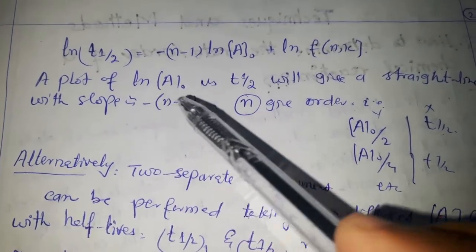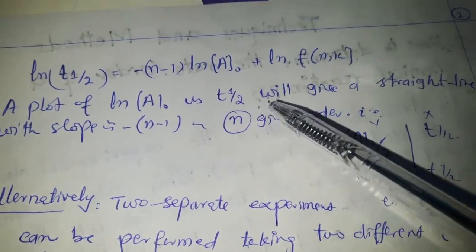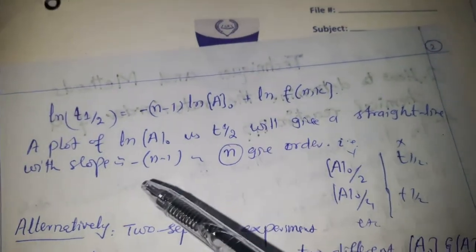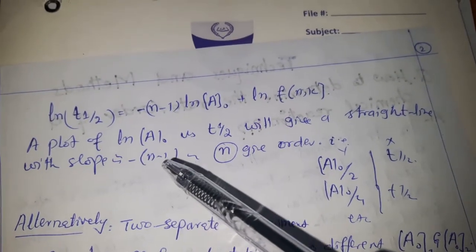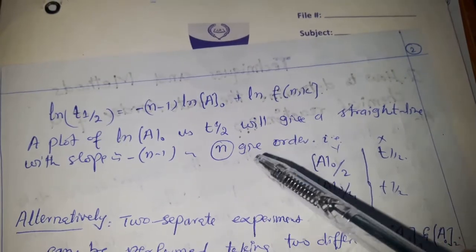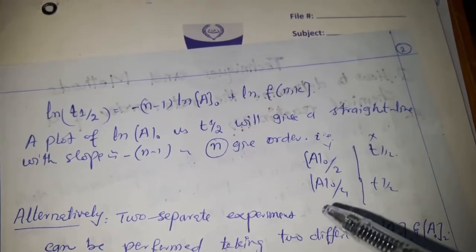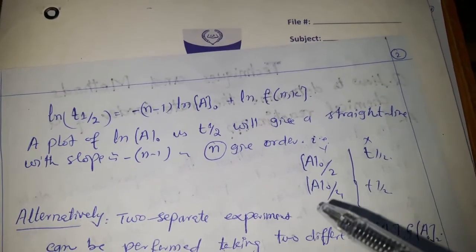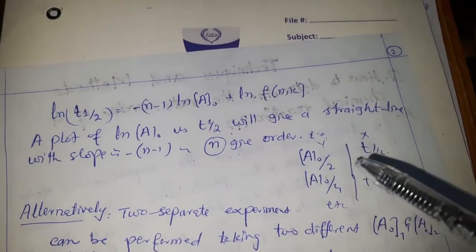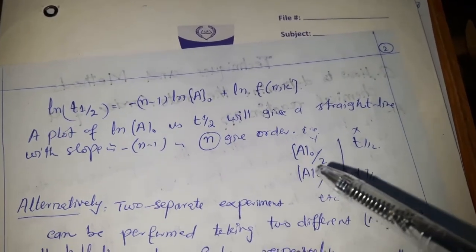A plot of log of half-life versus log of initial concentration will give a straight line with a slope equal to −(n−1). From this slope we can calculate the value of the order n. We can also calculate successive half-lives corresponding to concentrations [A₀], [A₀]/2, [A₀]/4, and so on.